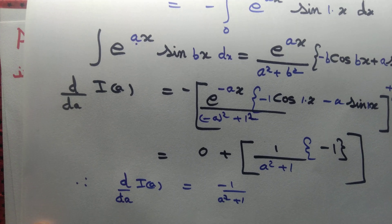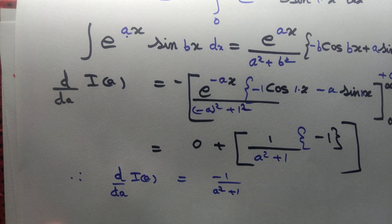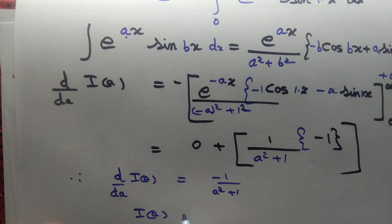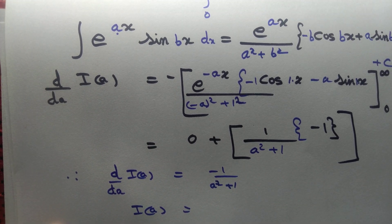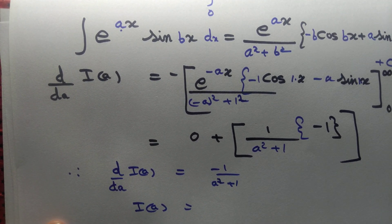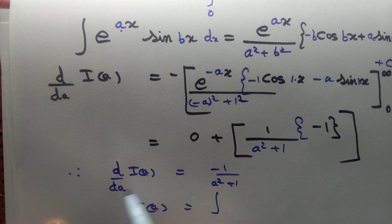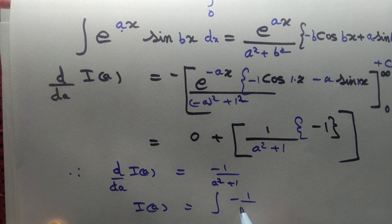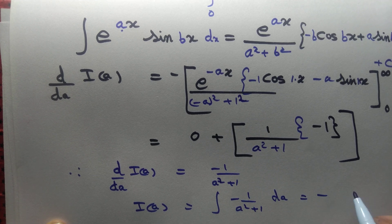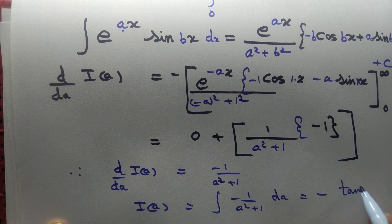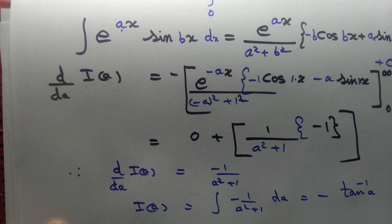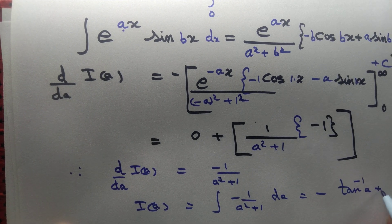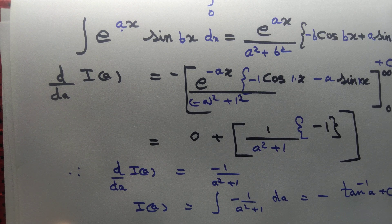So if the derivative of something is −1/(a² + 1), what is that something? We just need to integrate it — take da to the other side and integrate. That equals −tan⁻¹(a) + C, where C is some constant of integration. We now need to determine this constant.